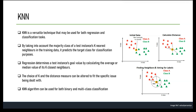However, KNN has some disadvantages. It is computationally expensive, especially when dealing with large datasets or high-dimensional feature spaces, because the algorithm needs to calculate the distance between the test instance and all training instances. Choosing the optimal value of K is difficult. KNN is also sensitive to the choice of distance metric and performs poorly with imbalanced data, where the majority class can dominate predictions.